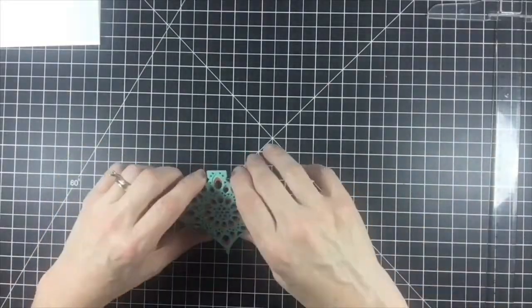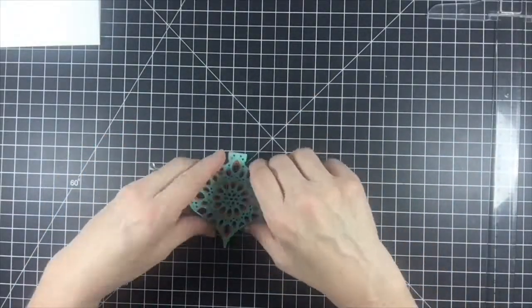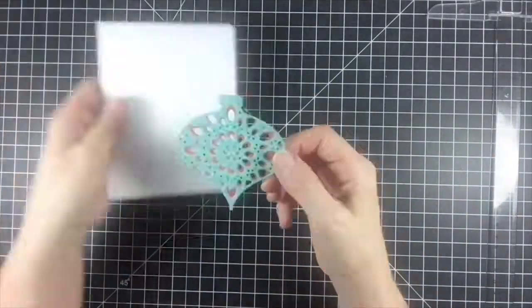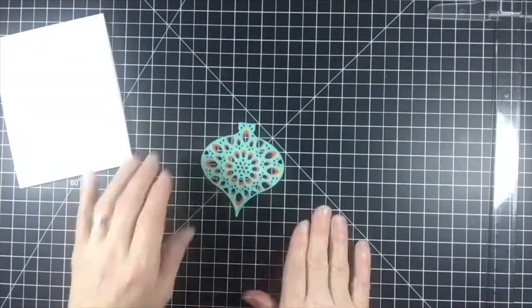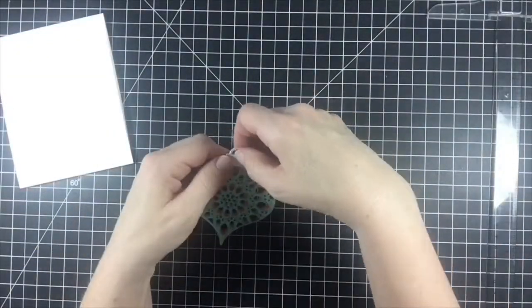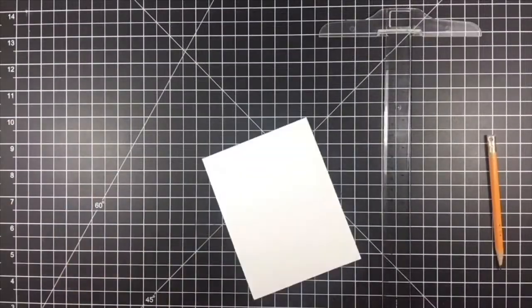Once I have the ornament adhered together the way that I wanted, I pressed around the edges to make sure that it was holding. Then I glued the ornament cap that I die cut with the silver shimmer paper to the ornament.